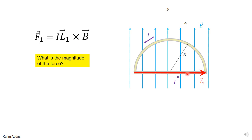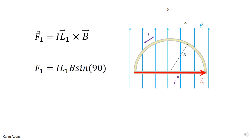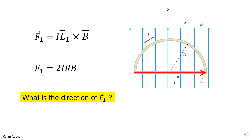The force as a vector is I·L1×B. What's the magnitude? L1 points this way and the angle between it and the magnetic field is 90 degrees, so the magnitude is I·L1·B·sin90°, and sin90° is just 1, giving I·L1·B. The distance L1 is just twice the radius, so L1 = 2r, giving a final value of I·2r·B for the force on side one.